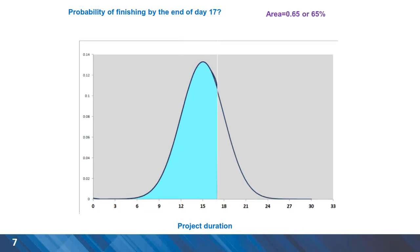For any duration greater than 15 days — the expected project completion time — we have a greater probability than 50%. In this particular example, we have a 65% chance that the project is completed at 17 days or sooner.